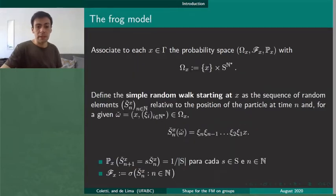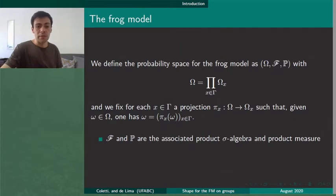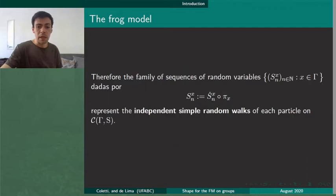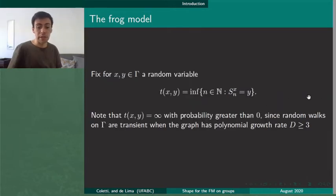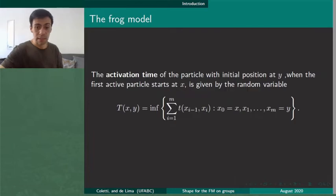Now we can define the simple random walks starting at each vertex. The frog model will be defined in the product probability space. Here we associate the random variable for each random walk. The activation time is the random variable given by the infimum of this sum here.